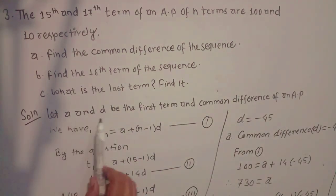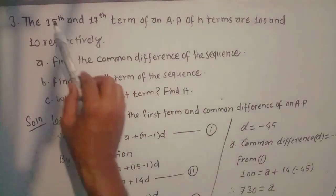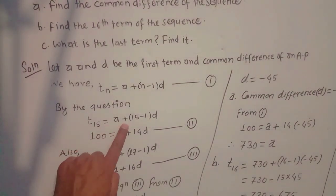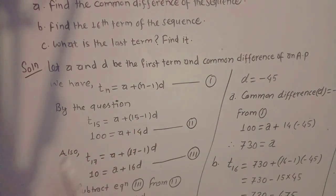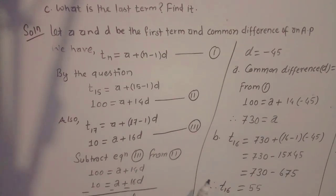Let a be the first term and d be the common difference. The formula is tn equals to a plus (n-1) times d. Question ma bancha: 15th term chai 100 chha. So t15 equals to a plus 14d equals to 100. This is equation 2. The 17th term ko value chai 10, so t17 equals to a plus 16d equals to 10. This is equation 3. Now we find the common difference and first term a ko value.